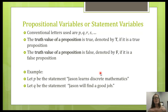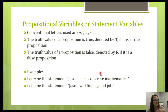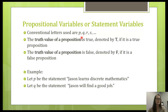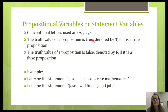Instead of writing propositions out in complete sentences and detail, if we can represent them as a variable and generalize different properties of these propositional variables, that'll be really handy down the road. We're going to be representing propositional variables with letters, just like we do with variables in algebra. It's conventional, especially in this text, to represent propositional variables as P, Q, R, and S — kind of like how you see X all the time in algebra. You could use anything, but most of the time you'll see P, Q, and R.